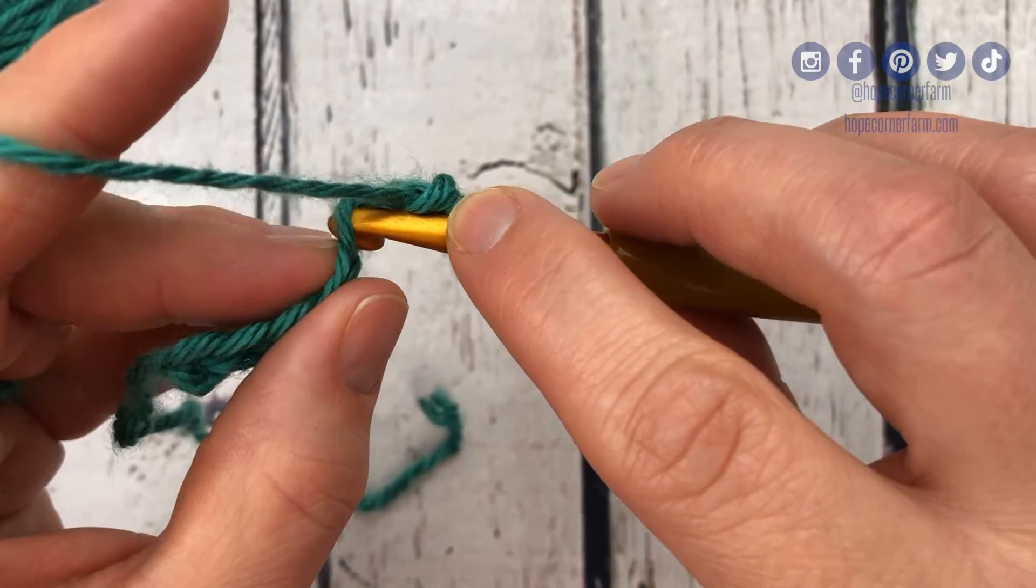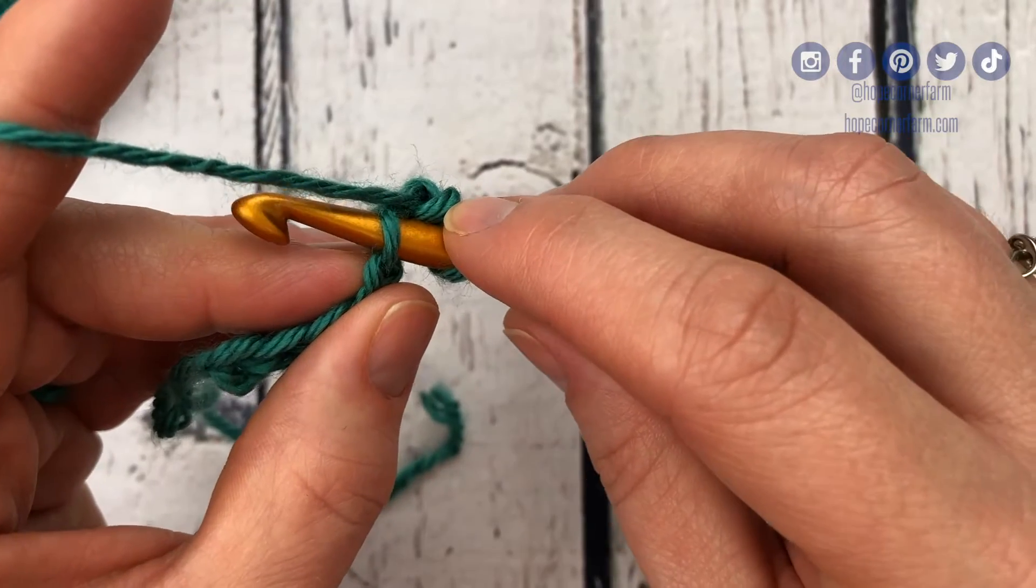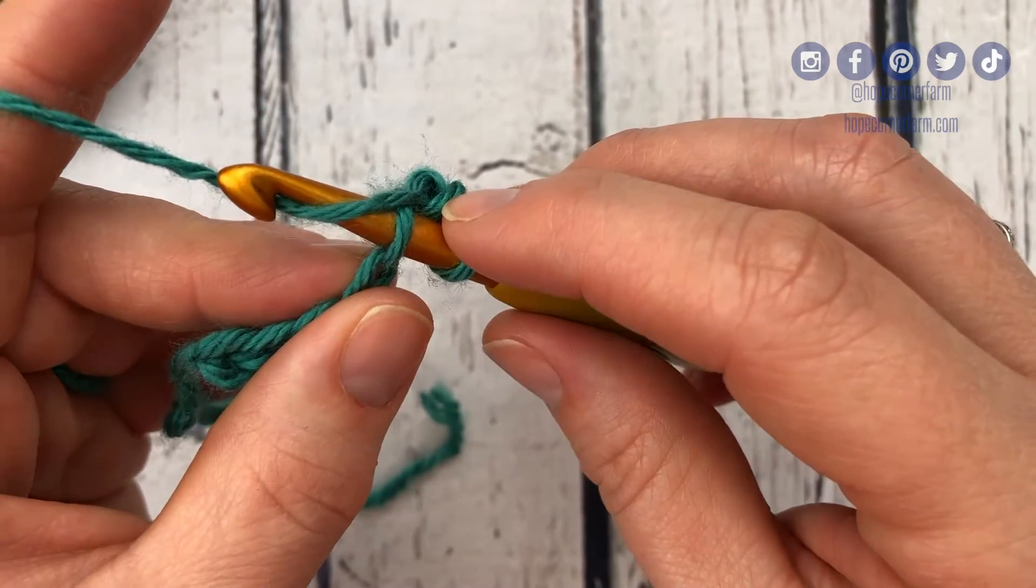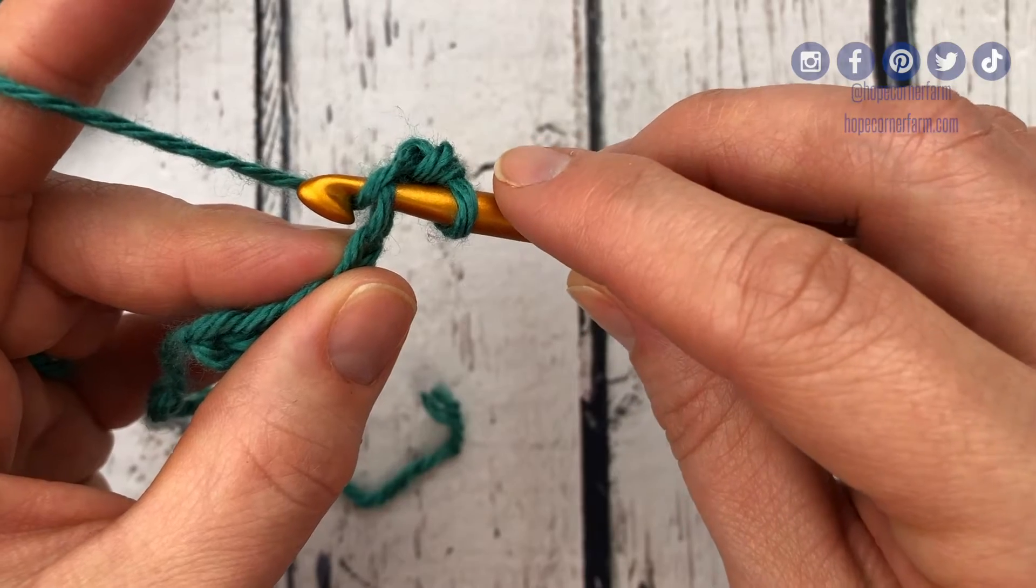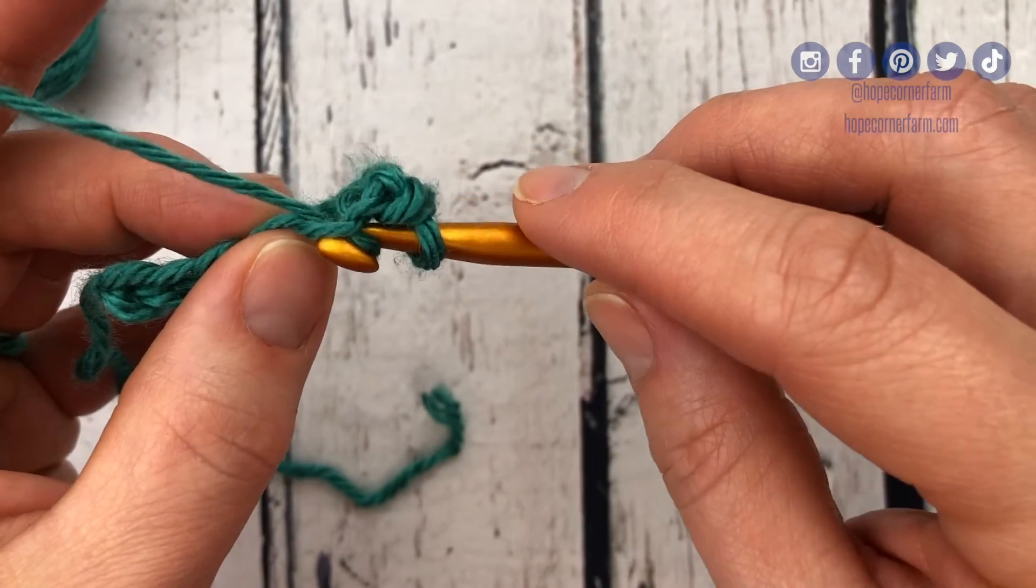The first yarn over, I'll put it into this second chain here, is simply coming up, grabbing onto the yarn, keeping my hook horizontal or facing towards me, and then pulling through the chain.